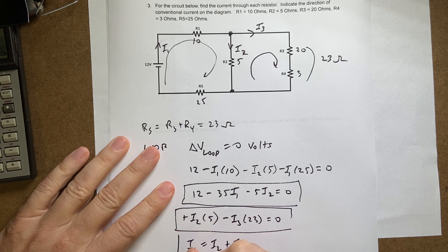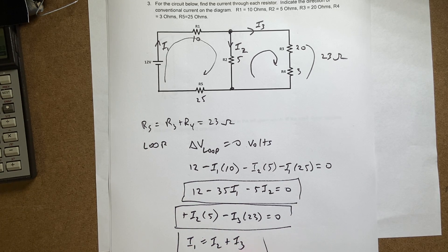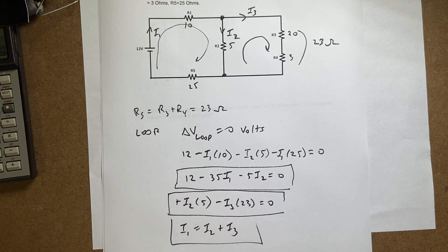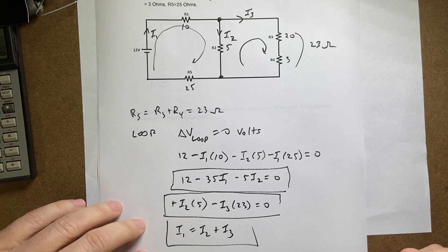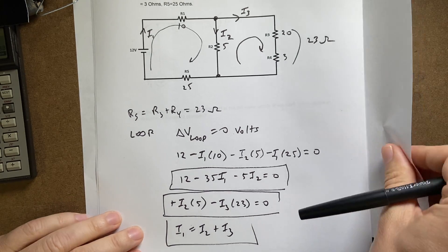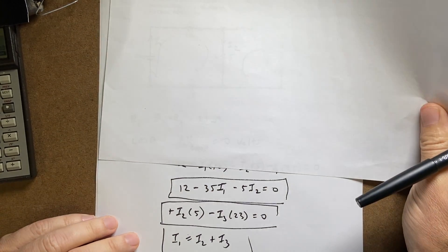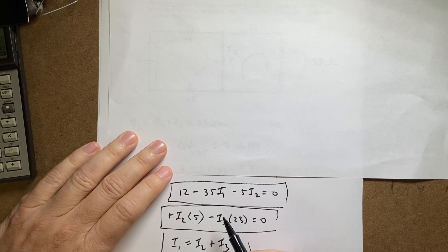Three equations, three unknowns. If you wrote that down, I mean, you're 85% finished with the problem. Okay, so let's get a piece of paper right here and solve these things.